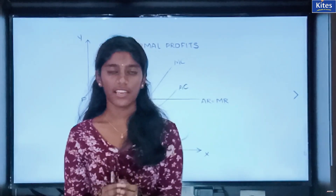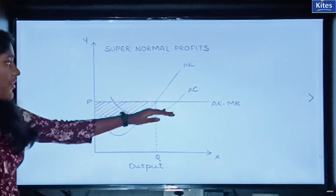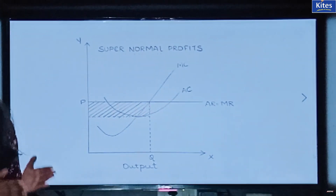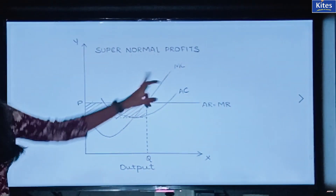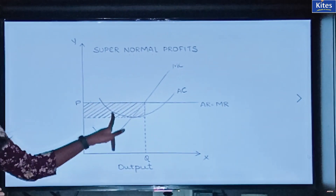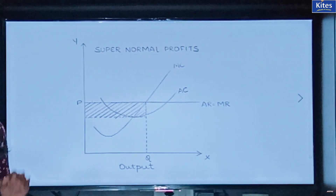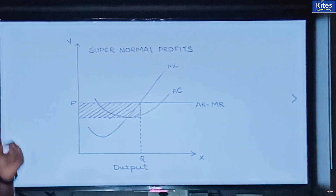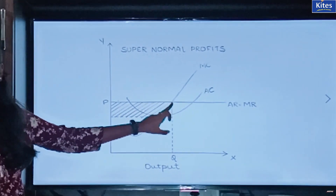In the short run we have super normal profits, normal profits, and losses. For super normal profits: this is your average revenue curve, marginal revenue curve, and price. As I said, in perfect competition your average revenue curve, marginal revenue curve, and price are the same. This is your MC curve and this is your AC curve — as learned in previous chapters, the AC and MC curves are U-shaped. The condition of equilibrium is where the MC curve equals the MR curve and the MC curve cuts the MR curve from below — that is your equilibrium point.